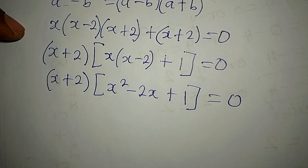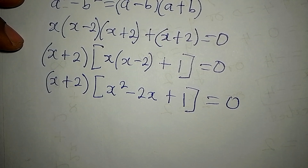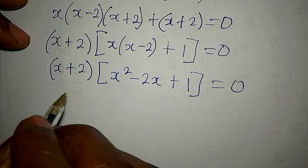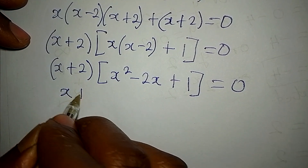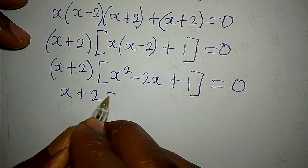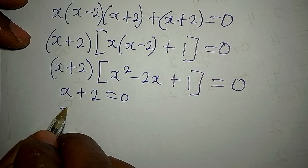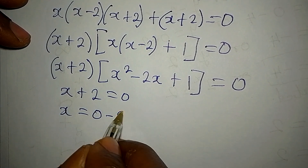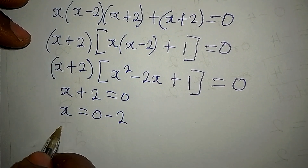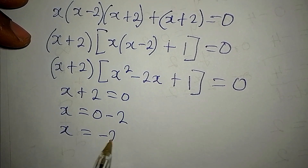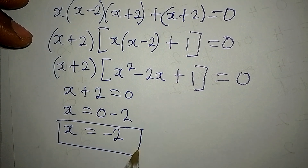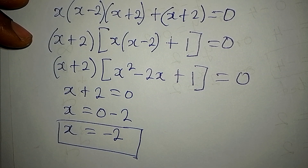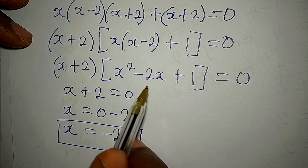We are solving this completely. It is either x plus 2 equals zero, so that x equals zero minus 2, meaning x equals negative 2. This is the first value of x.